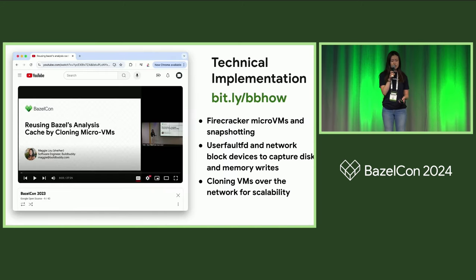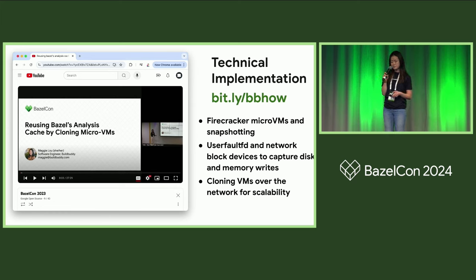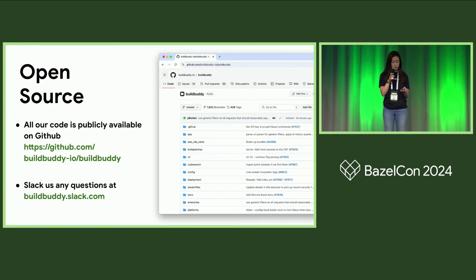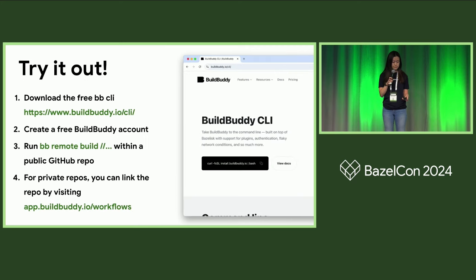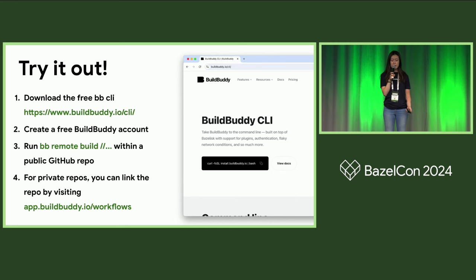If you're interested in the technical implementation, I recommend my BazelCon talk from last year. I talk about how we use Firecracker and snapshotting to preserve workspaces, and how we use userfaultfd and network block devices to capture all disk and memory writes in order to store them in a remote cache — this lets us clone VMs over the network, making our product very scalable. We're open core and all of our code is publicly available on GitHub. To try it out, you can download the bb CLI and run a Remote Bazel build from any public GitHub repo — for private repos, you'll just have to authorize it on our site ahead of time.